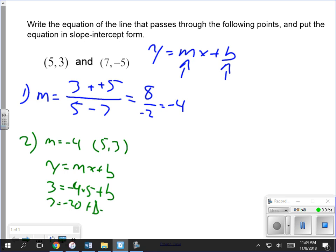Add 20 to both sides. I'm moving up here so I have room. 3 equals negative 20 plus b. Add 20 to both sides, 23 equals b.